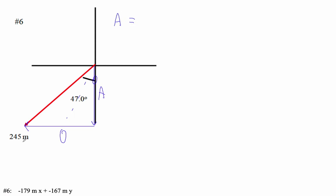Adjacent is 245 cos 47. What is that? It's 167.1, so I'll just say 167.